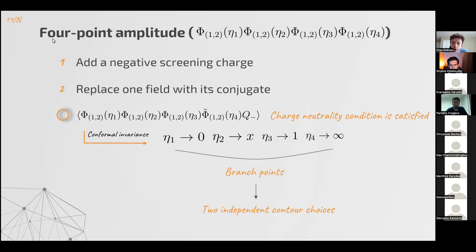The first conformal block goes from 0 to x and the second from 1 to infinity. If one does the calculations analytically, one finds that these two conformal blocks are hypergeometric functions. Using OPEs on the first two fields, we can identify the first conformal block with a diagram where the intermediate state is the field φ_{1,1}, and the second with φ_{1,3}.